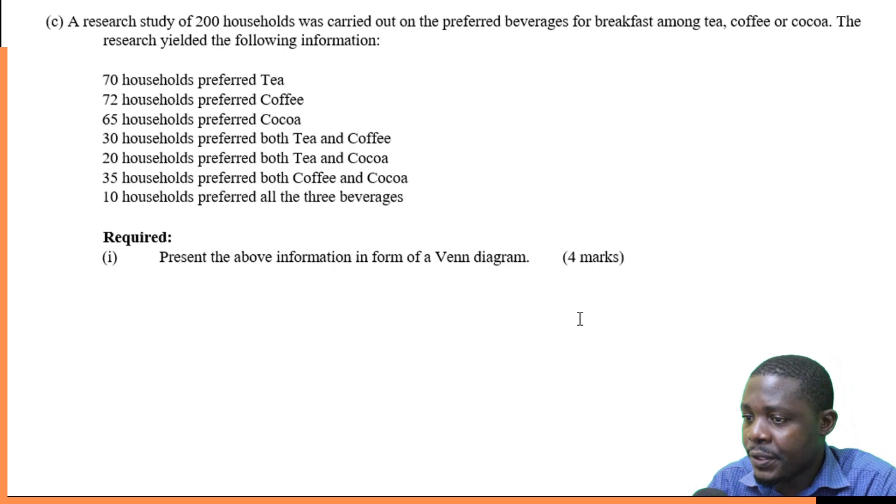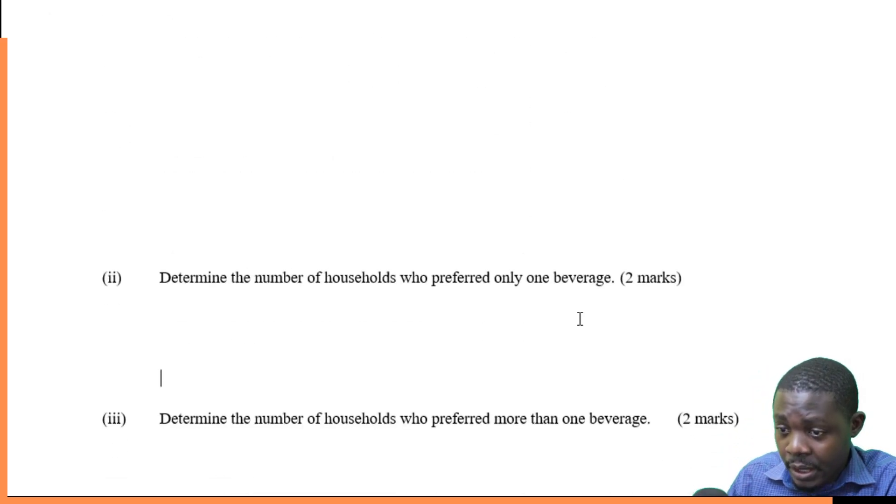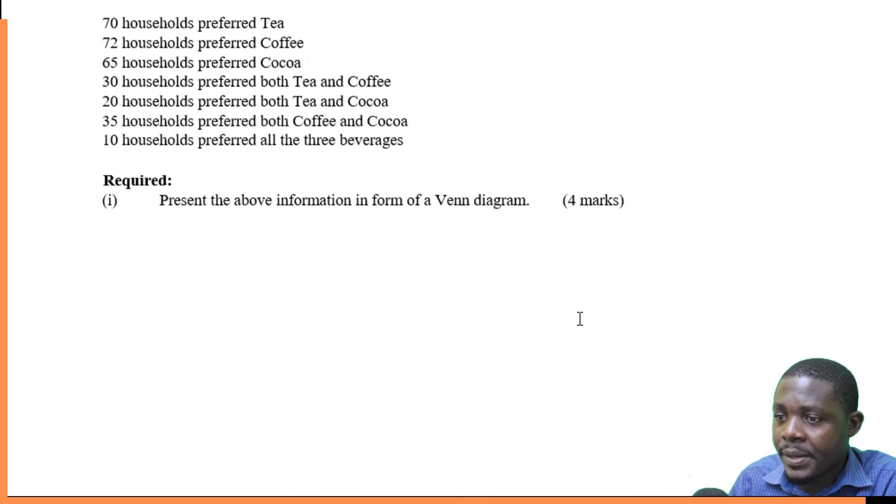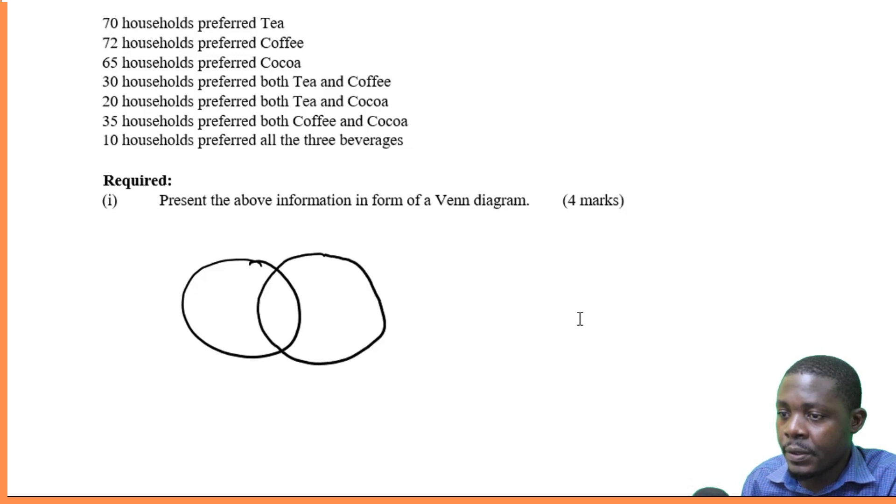Roman 1, present above information in form of a Venn diagram. Then determine the number of households who preferred only one beverage. Roman 3, determine the number of households who preferred more than one. And then lastly, Roman 4, calculate the number of households who preferred at least one beverage. Let's start by presenting this information in a Venn diagram. This is how a Venn diagram looks like.